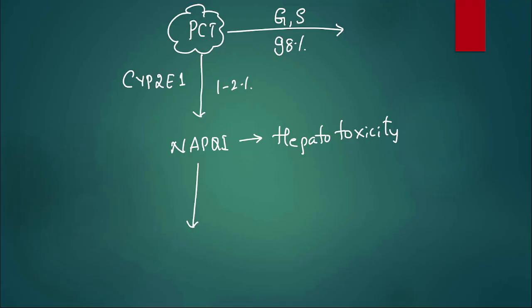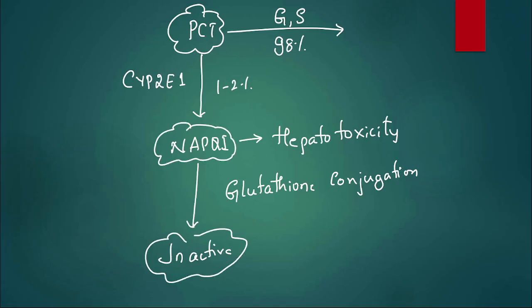Usually when we take paracetamol, nothing will happen - liver is fine because this NAPQI is neutralized or reduced by glutathione. There is something called glutathione; it undergoes glutathione conjugation and that NAPQI is neutralized, made inactive. That's why if you take paracetamol, your liver is not going to get affected because whatever NAPQI generated is made inactive by glutathione.